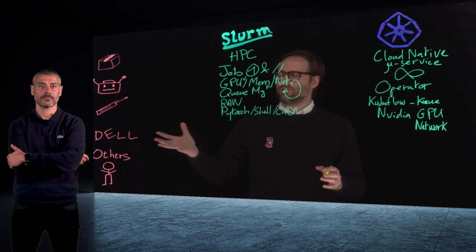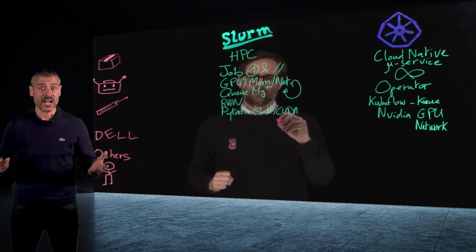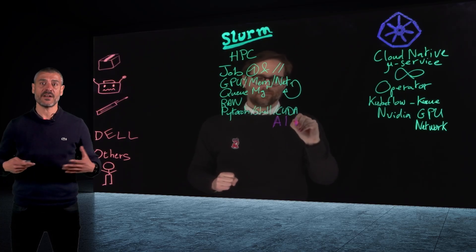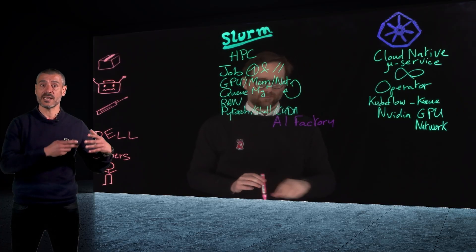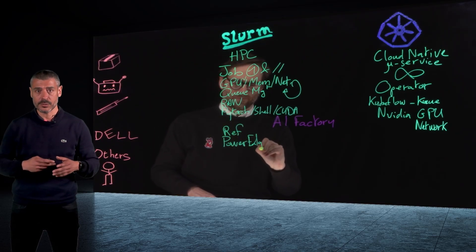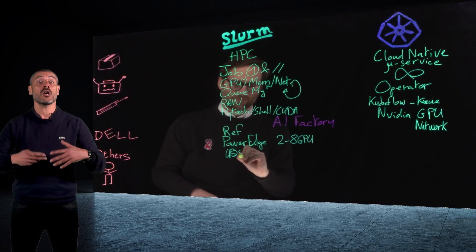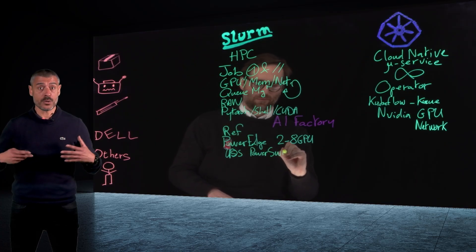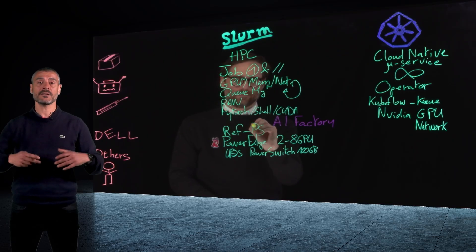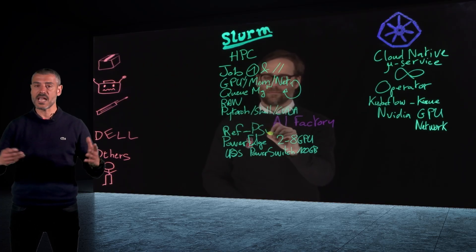At Dell, we help our customers build and run AI workloads with the best tools. If you use SLURM, we support you with Dell AI Factory, which gives you validated hardware for HPC and AI workloads — servers ranging from two GPUs up to eight GPUs. We offer unstructured storage with PowerScale or ECS for object storage, networking with PowerSwitch, pre-tested software stacks with SLURM and ML tools, best practices, fast setup with automation and reference designs, and support from Dell experts for HPC and AI workloads.